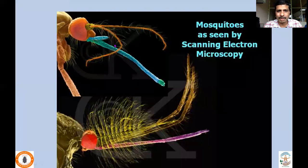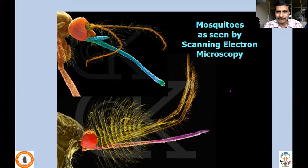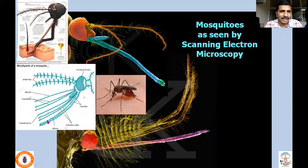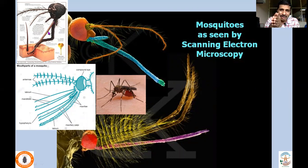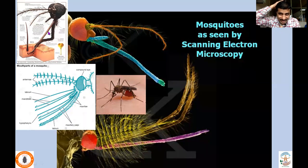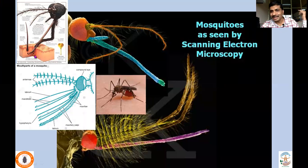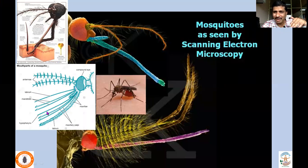The proboscis bends as the insect feeds, and the six stylets packed within are pushed into the victim's body by pressure created on the head region, sucking blood. These six stylets are actually modified mandibles, maxillae, one labrum, and hypopharynx — all modified as long needle-like structures that pierce and suck blood.